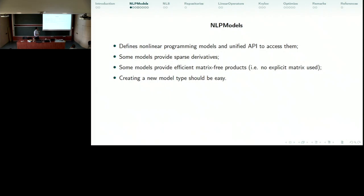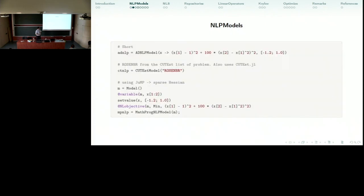The model creation is actually one package, NLPModels. This package defines nonlinear programming models and a unified API to access them. These models can be created in many ways. Some models provide sparse derivatives and some provide efficient matrix-free products, sometimes both, and creating a new model type should be easy. Here is an example. I hope you can see well. I have three ways of creating models here. The first one is a ForwardDiff automatic differentiation way in which I pass the function and a starting point. Here I have the CUTEst model, which I'll explain shortly. It gets Rosenbrock from a list of problems and just creates the model. And here I have the current JuMP way of creating the model. I create an NL model and I create this MathProgNLPModel which converts the JuMP model to my NLP model.